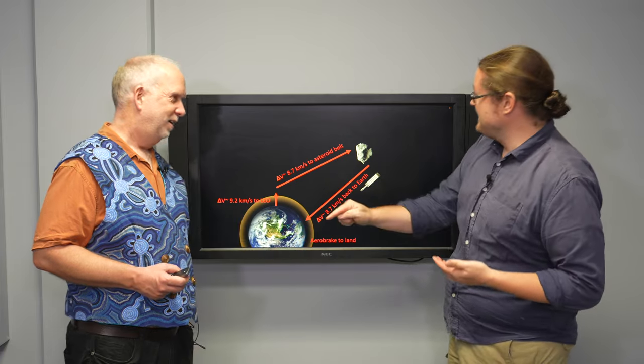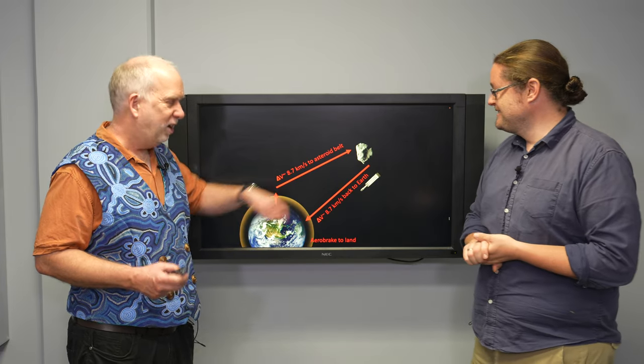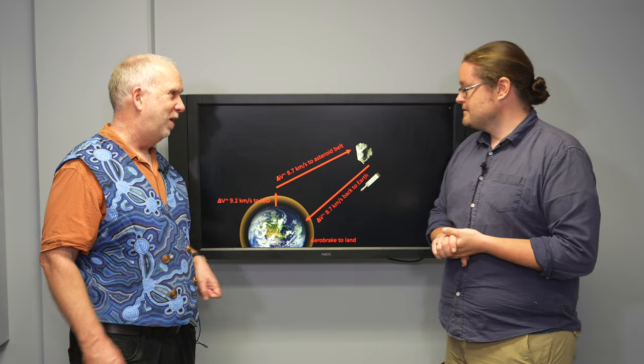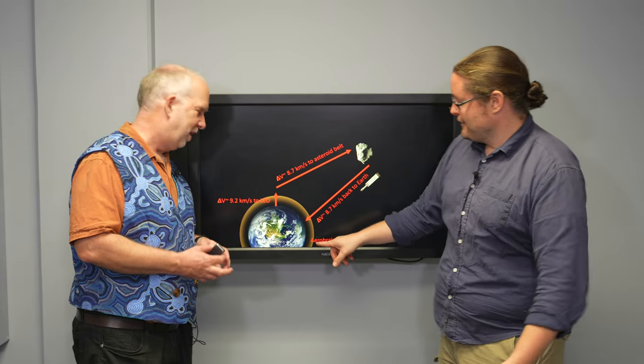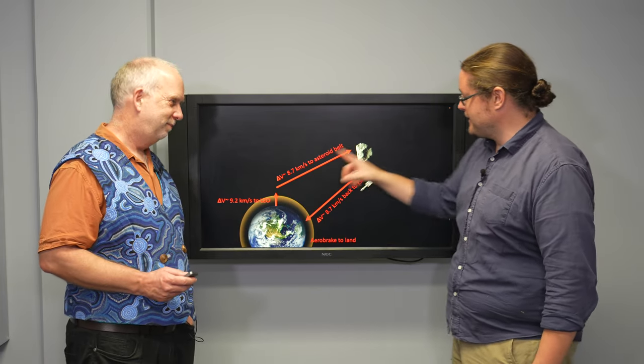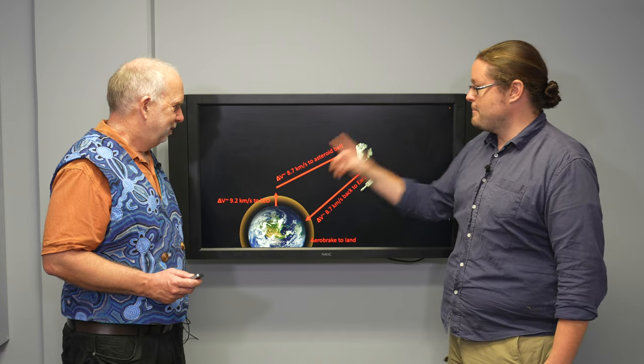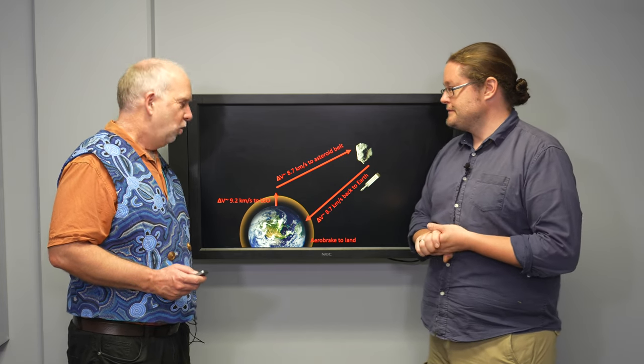Then you need about 9 to get to the asteroid belt. But we need to get back, though. And if you wanted to land by rockets, then you'd need another 9 to get down. But we can aerobrake on the way back, so we can use Earth's atmosphere to slow down. So we can save that last 9. So we need 3 sets of 9 to get up there and back with our payload.